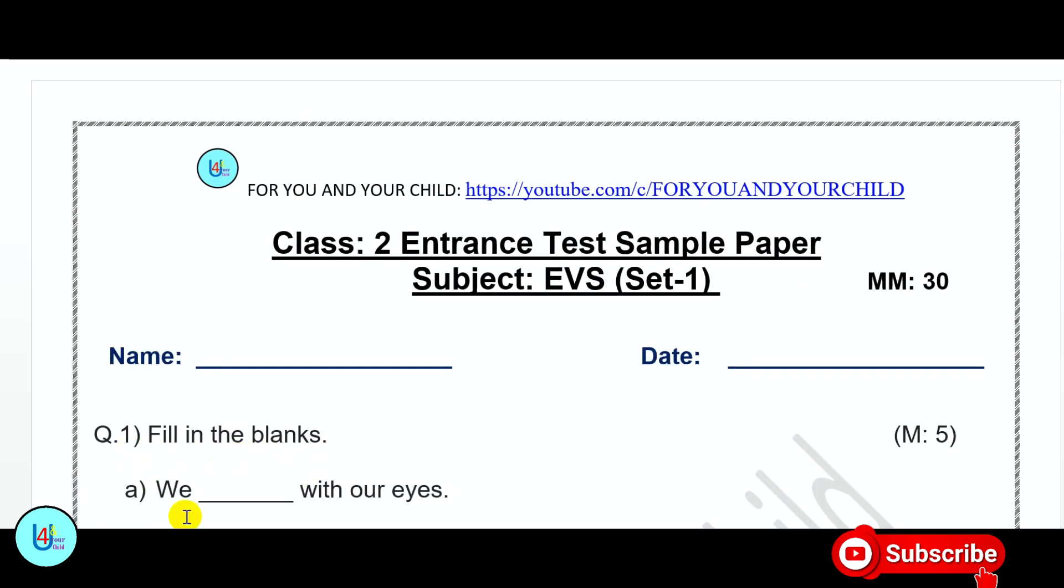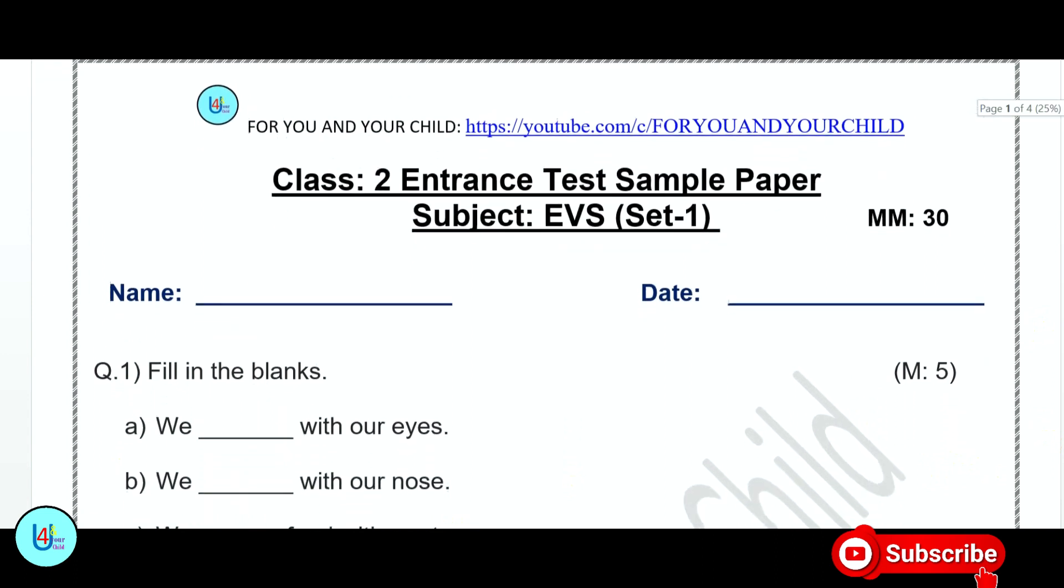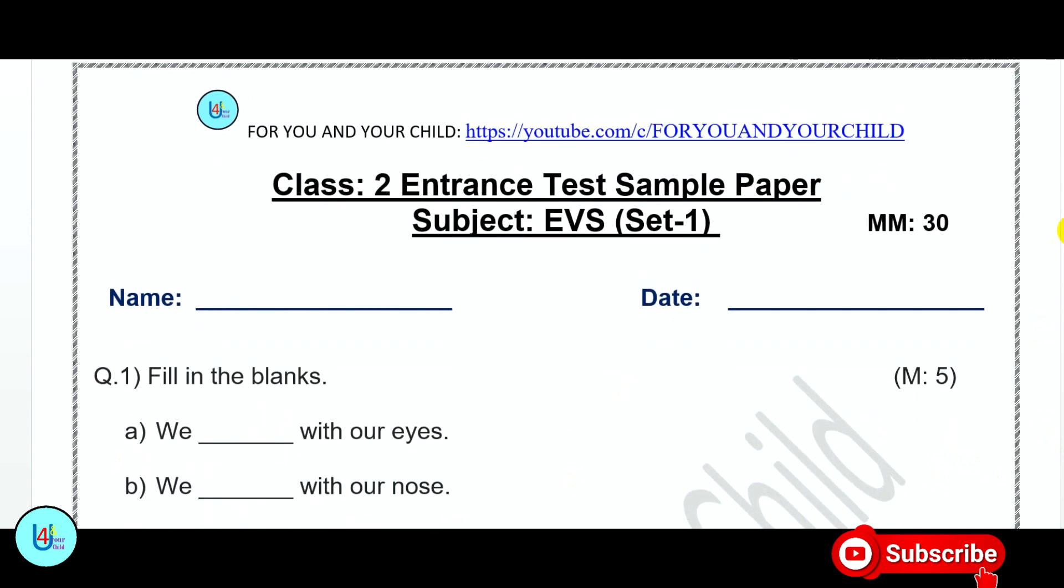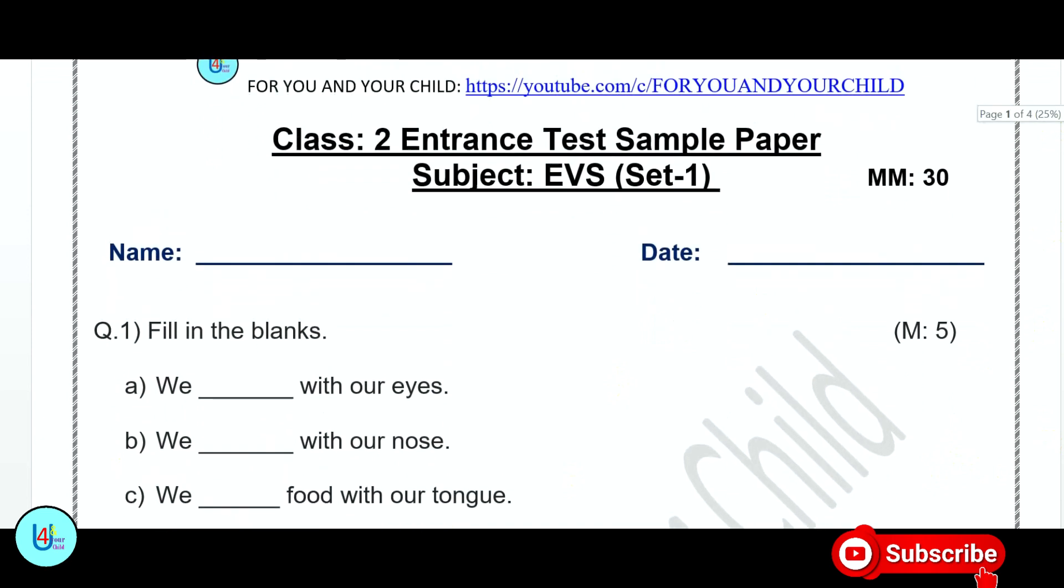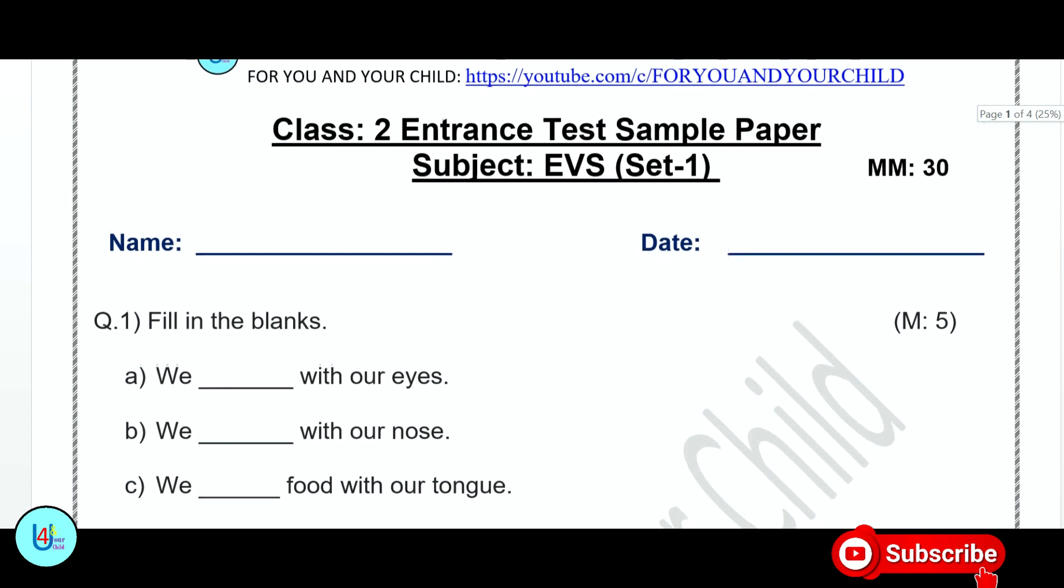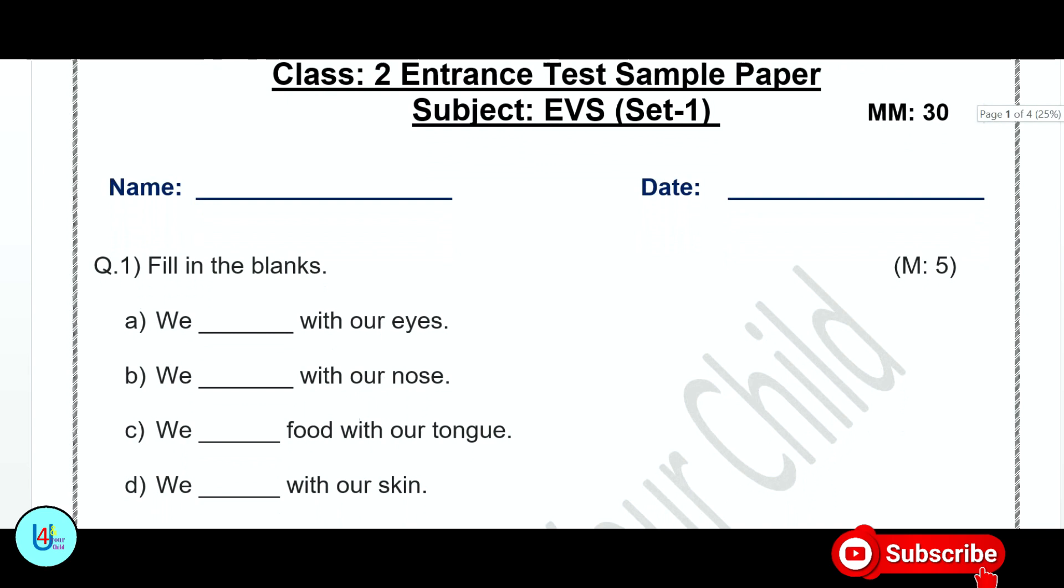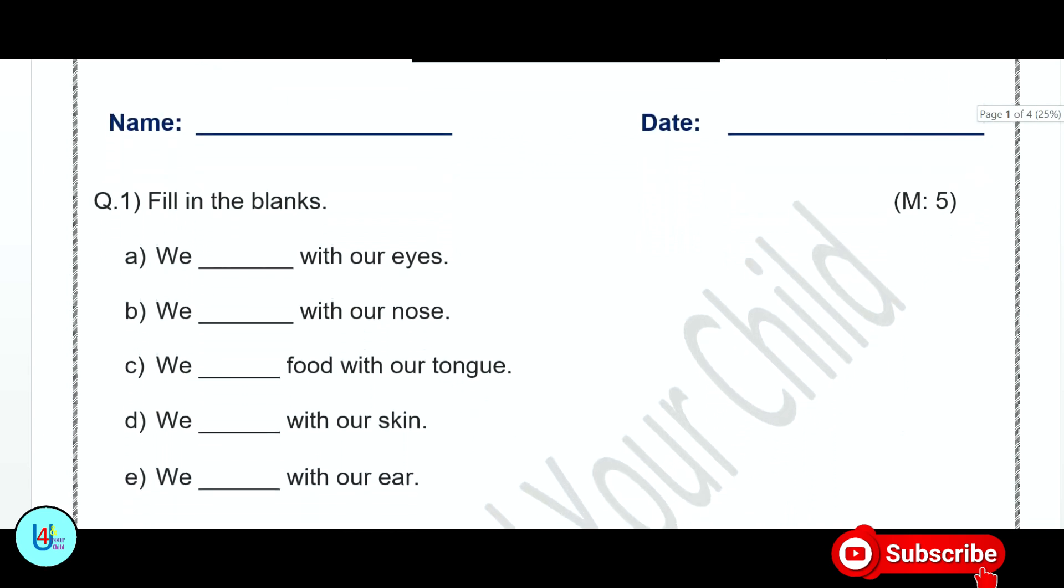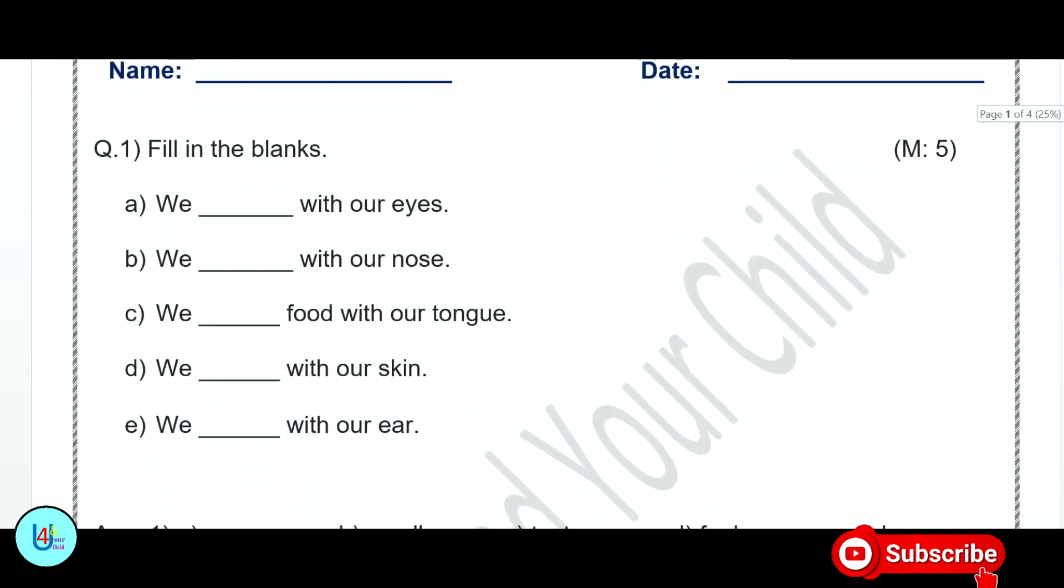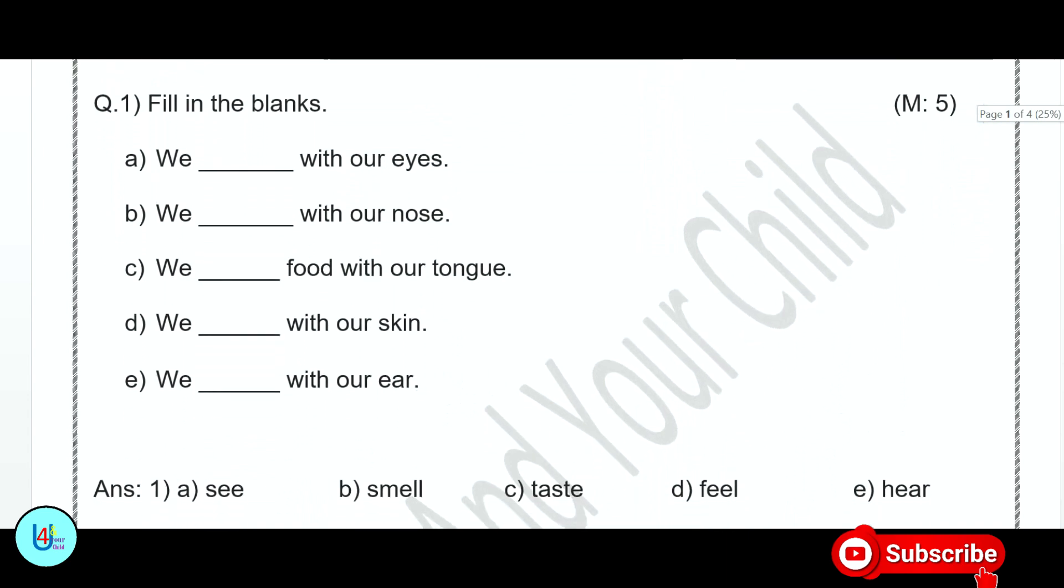Question number 1 is fill in the blanks. We blank with our eyes. Sense organs can be studied in school. What do we do with eyes? We see with our eyes. We blank with our nose. We smell with our nose. We blank food with our tongue. We taste food with our tongue.